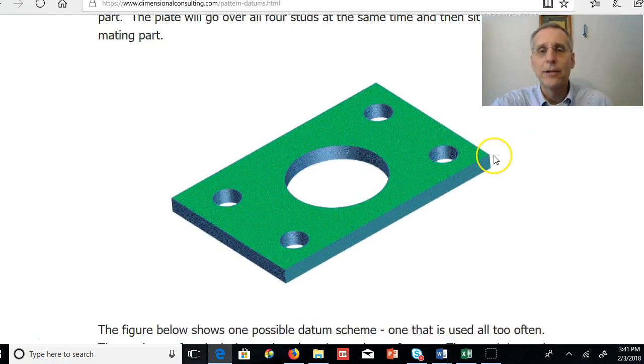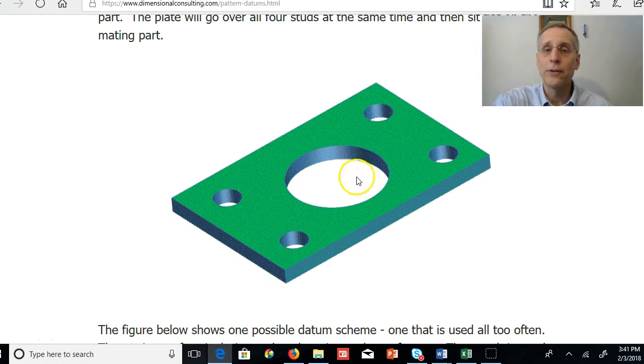Let's see what I'm talking about. Say we have a plate here. The plate has four clearance holes and then another hole in the middle that's going to be located relative to these four clearance holes.